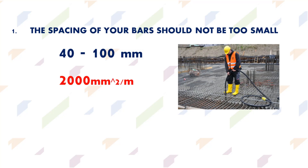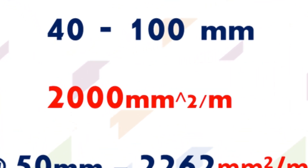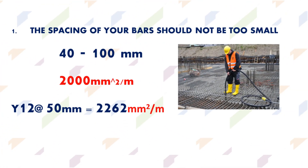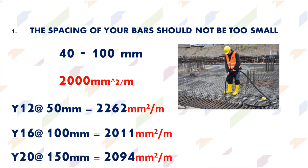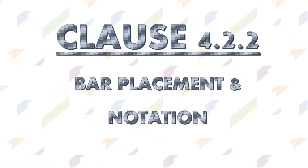Whenever you are designing and your computer program gives you a design that needs, say, 2,000 square millimeters per meter and it suggests Y12s at a spacing of 50 millimeters, that will not work well for you. You can achieve 2,000 square millimeters per meter by providing instead Y16s at a spacing of 100 millimeters center to center, or even Y20s at a spacing of 150 millimeters center to center. Be mindful of this before you accept any automatically generated bending schedule in Procon or any other computer program.